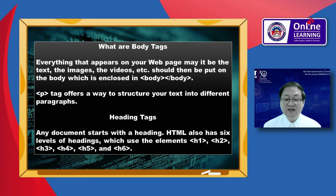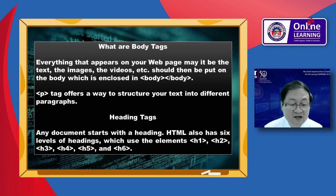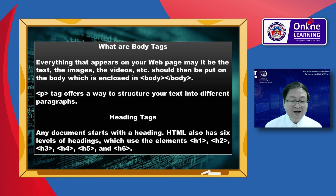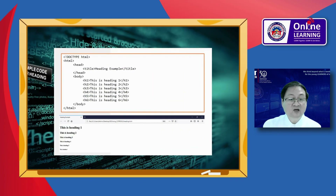Heading tags — any document starts with a heading. You can use different sizes for your headings. HTML has six levels of headings which use the elements h1, h2, h3, h4, h5, and h6. While displaying any heading, the browser adds one line before and one line after the heading. Here is a sample code for heading. That's the end of chapter one.